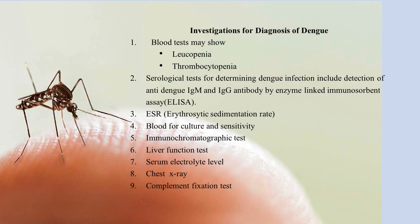Investigations for diagnosis of Dengue: blood test may show leukopenia and thrombocytopenia. Serological tests for determining Dengue infection include detection of anti-Dengue immunoglobulin M and immunoglobulin G antibody by enzyme-linked immunosorbent assay (ELISA).